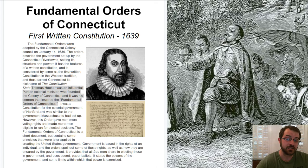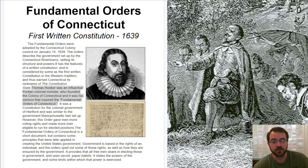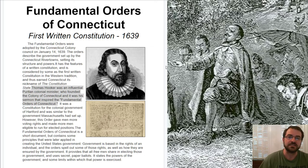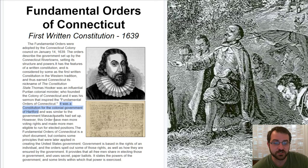He wanted to limit government. As an example, under the Fundamental Orders of Connecticut, the same person could not be governor for two years in a row. Also, because the people were electing their representatives, they could elect different representatives if they didn't like what the government was doing. This constitution was for the colonial government of Hartford, which is part of Connecticut, and was similar to the government Massachusetts had set up. However, it gave men more voting rights and made more men eligible to run for elected positions.